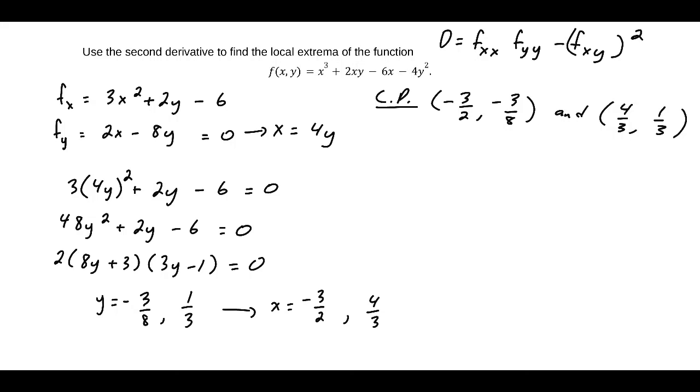So let's also find fxx. fxx is equal to 6x, fyy is equal to negative 8, and fxy is equal to 2. So we'll want to evaluate each of these functions we've just found at each of our critical points and see what we get.